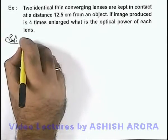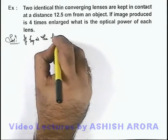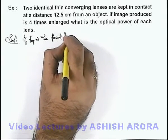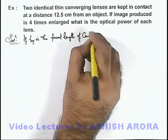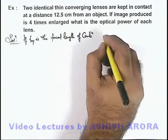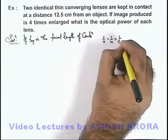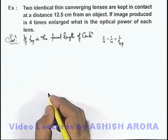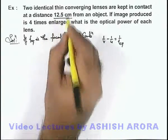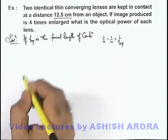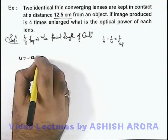Here we can say if f_eq is the focal length of the combination, we can use the lens formula as 1/v minus 1/u equals 1/f_equivalent for this lens combination. We are given that the object is kept at a distance of 12.5 centimeters from the lenses, so here we can write u is minus 12.5 centimeters.